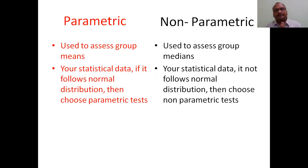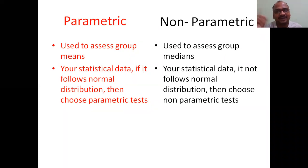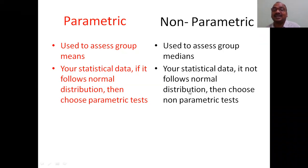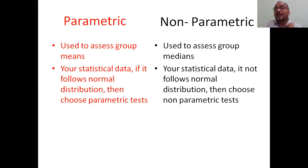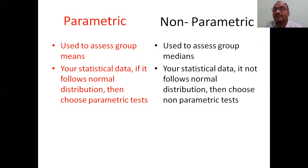If your statistical data follows a normal distribution — that is, a bell-shaped distribution — then choose the parametric test. If your data does not follow a normal distribution, then choose the non-parametric test. So remember: parametric tests compare means, non-parametric tests compare medians — keep that in your brain.